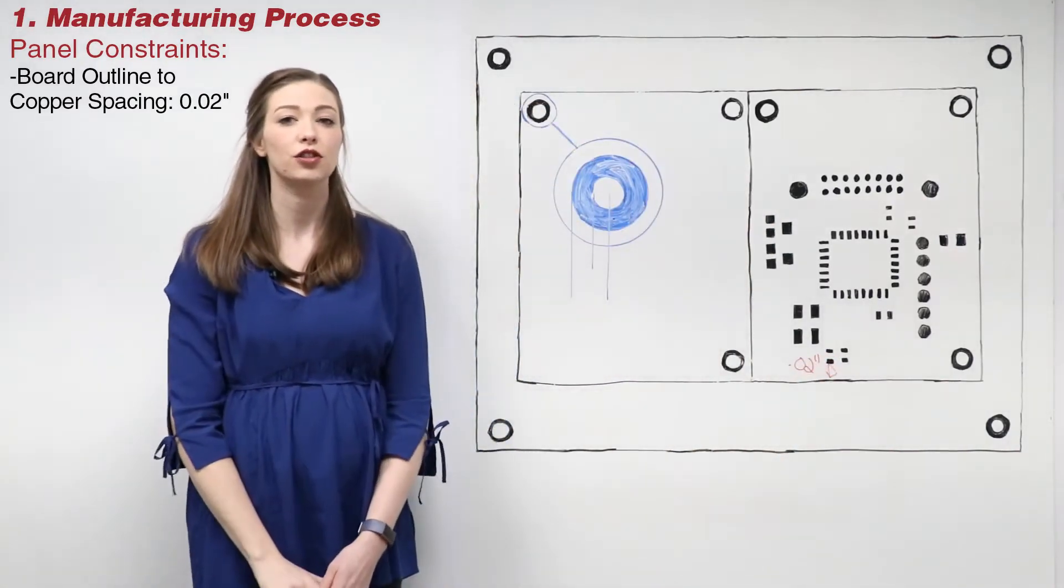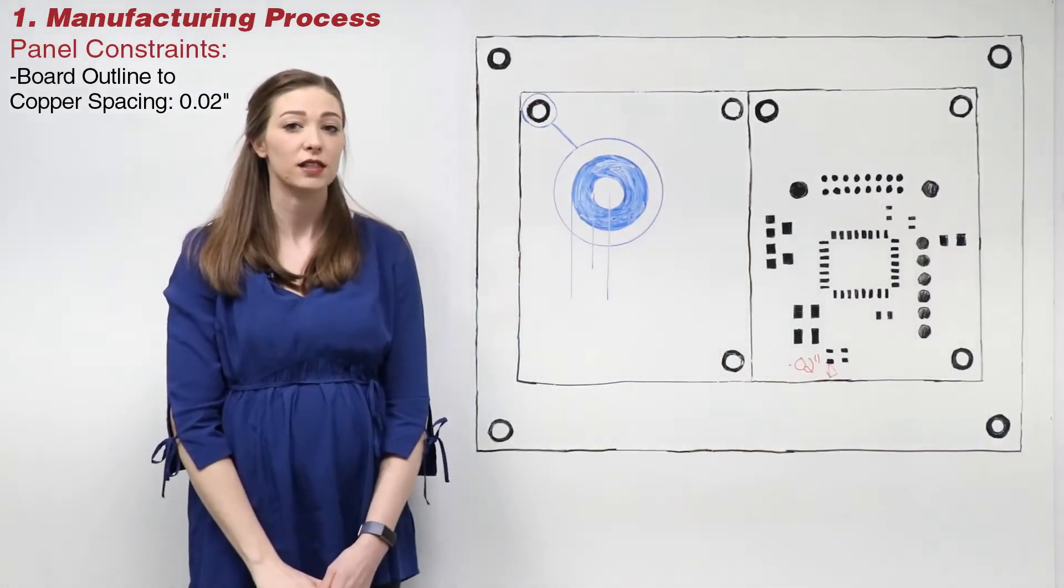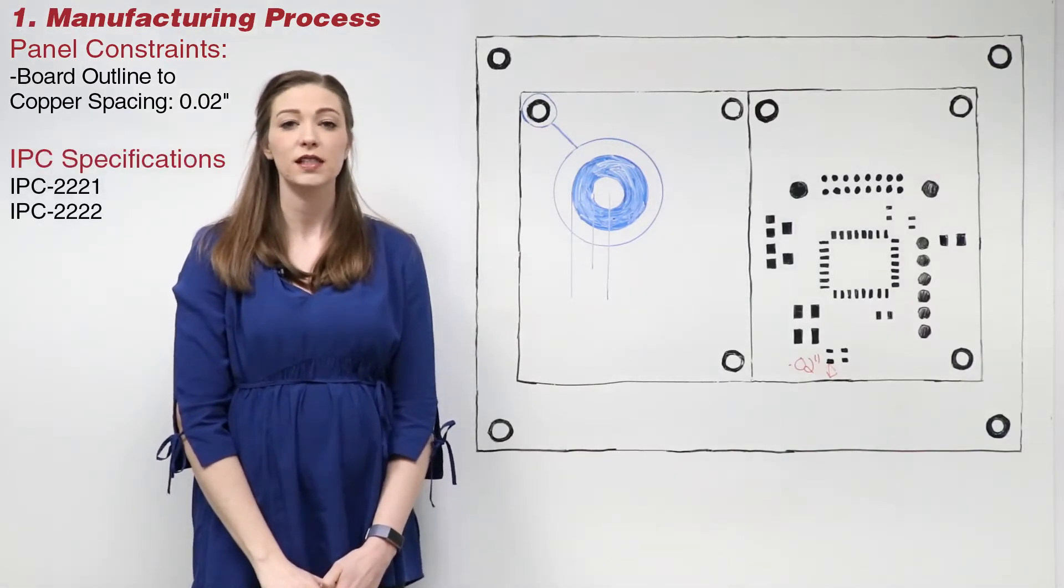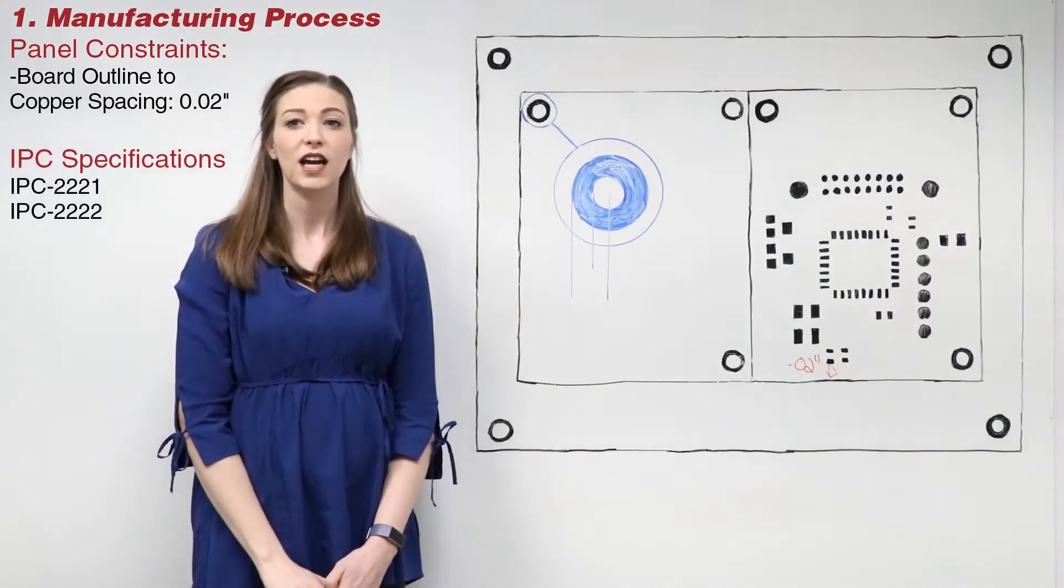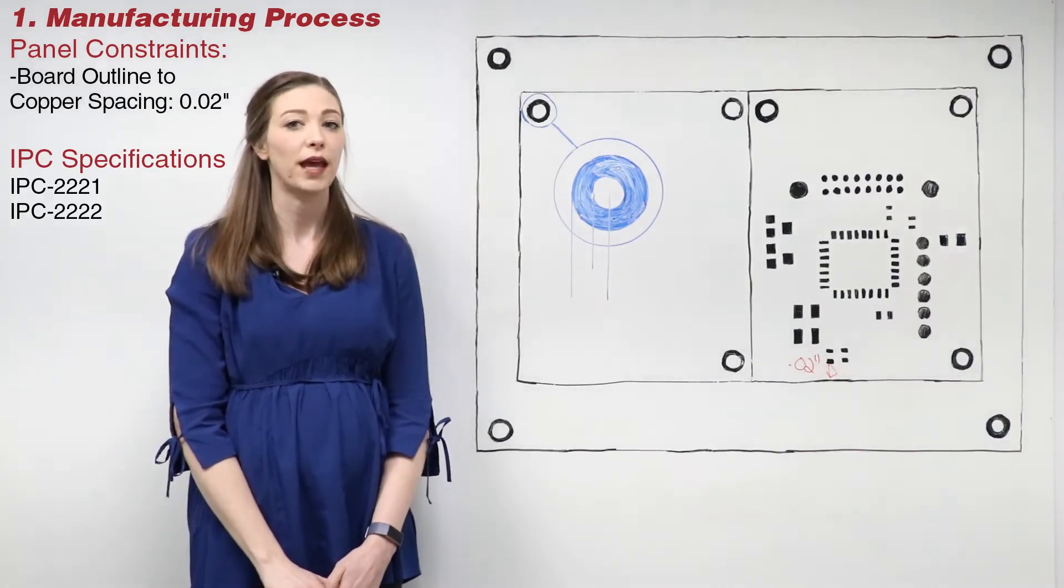Enter your design to ensure a successful assembly process. IPC-2221 and IPC-2222 provide guidelines for creating manufacturable, cost-effective panels.